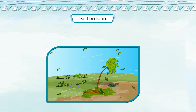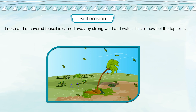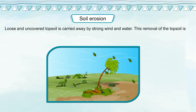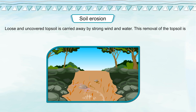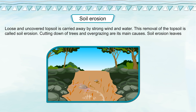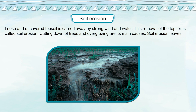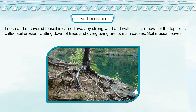Soil Erosion. Loose and uncovered topsoil is carried away by strong wind and water. This removal of the topsoil is called soil erosion. Cutting down trees and overgrazing are its main causes.